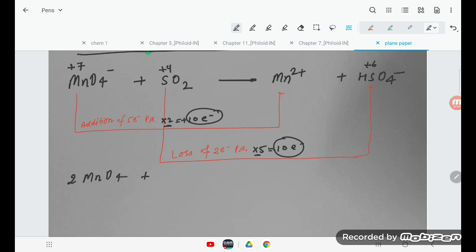So 2 times, that's 2 MnO4^- plus 5 SO2. This is 5 SO2. And it is giving 2 Mn^2+ and then it is going to give 5 SO4^-.